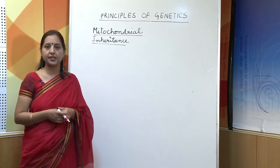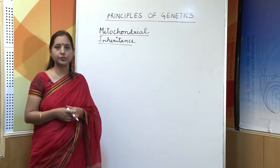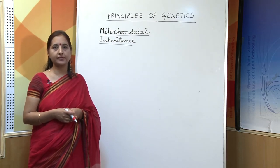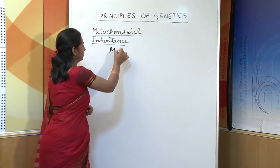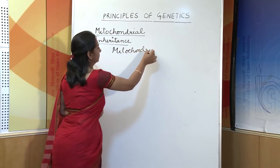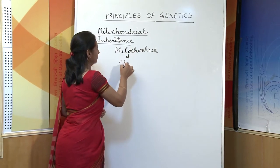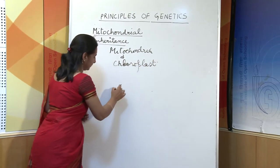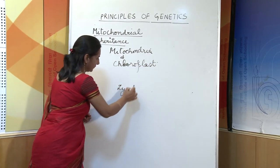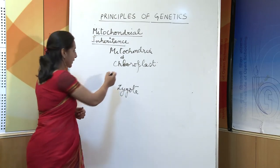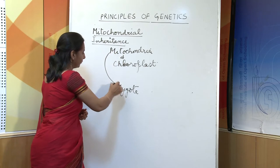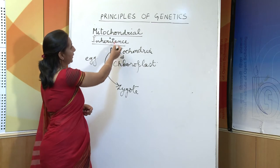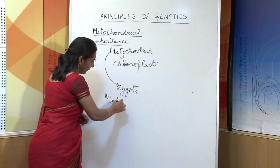Till now we have studied that genes are present in the chromosomes inside the nucleus, but mitochondria and chloroplast also have some amount of DNA. The zygote gets the chloroplast and the mitochondria from the egg, that is from the mother's body. Therefore, this inheritance is also called maternal inheritance.